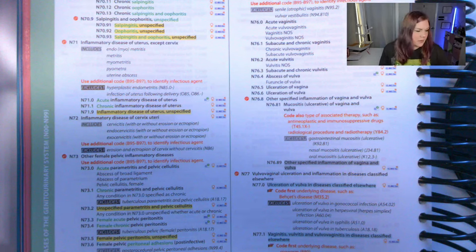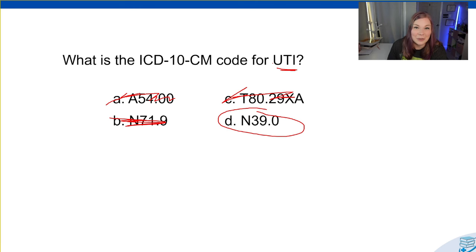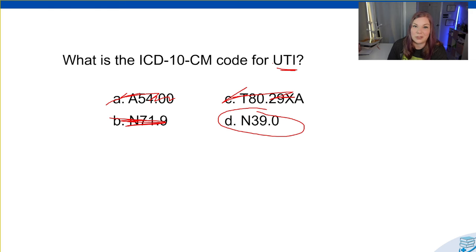Another strategy — and again, this is just for testing purposes, not our normal daily coding activities — is to look up infection, urinary tract in the alphabetic index. It tells us the default code is N39.0. You don't think there's going to be anything in the tabular list to tell you otherwise, so you can select D and put a little note next to it to verify later if you have time at the end of the exam. This is just a strategy to save time. If you're almost positive it's going to be N39.0 and don't want to waste time verifying it in the tabular, you can always mark it to double-check later.